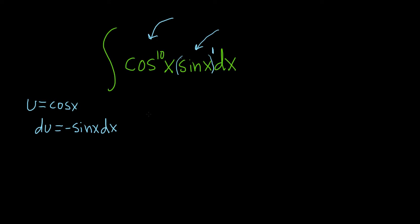Now we don't have a negative sine in our integral, so we have to make this piece here look like what's in our integral up here. So to do that, we'll divide both sides by negative 1.